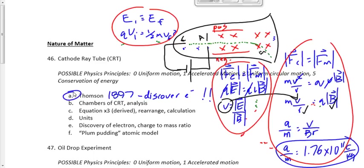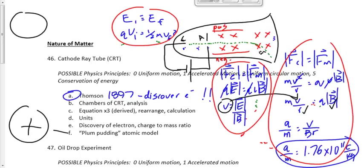Before we do a multiple choice question, let me quickly tell you where this led in terms of the model of the atom. Prior to this we had the Dalton solid sphere model. Now, at least in 1897, we have the plum pudding model of the atom — where the atom consists of a sea of positive charge with a bunch of little negative electrons floating around inside. So now there's something subatomic, smaller than the atom. That's a big step forward from the Dalton solid sphere model.